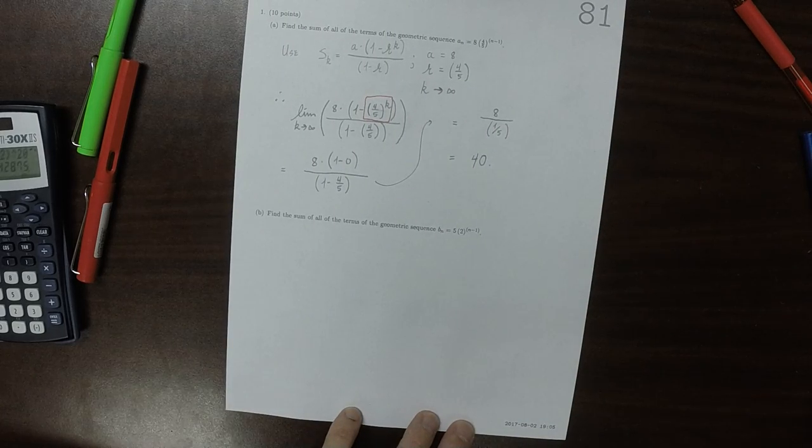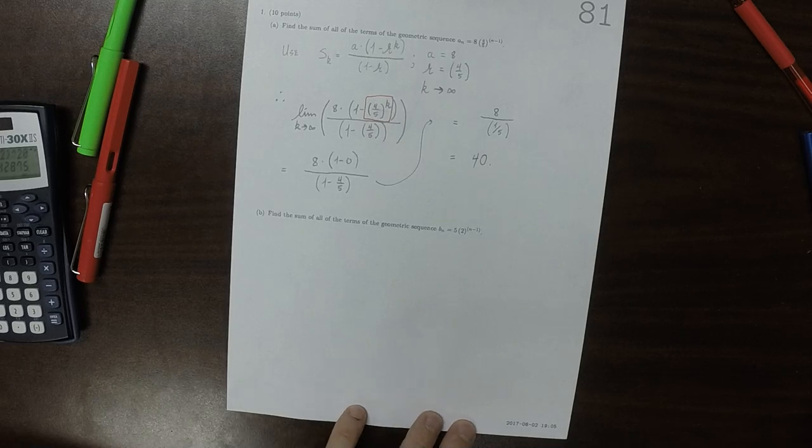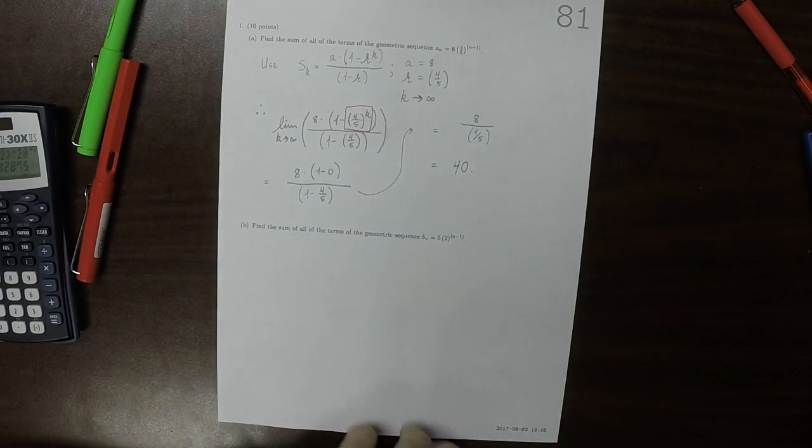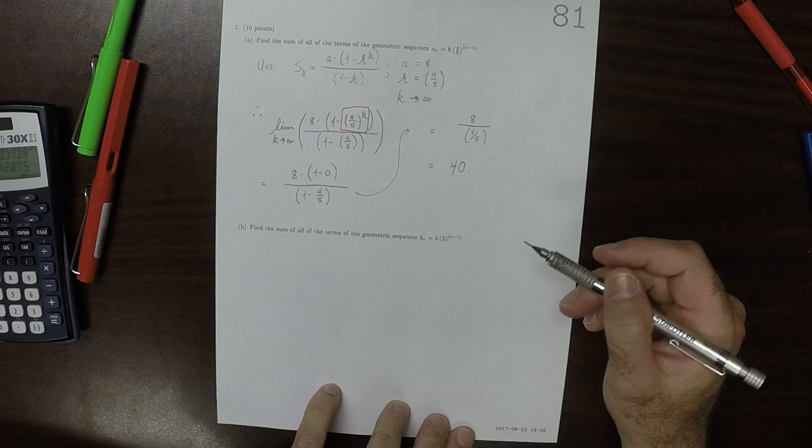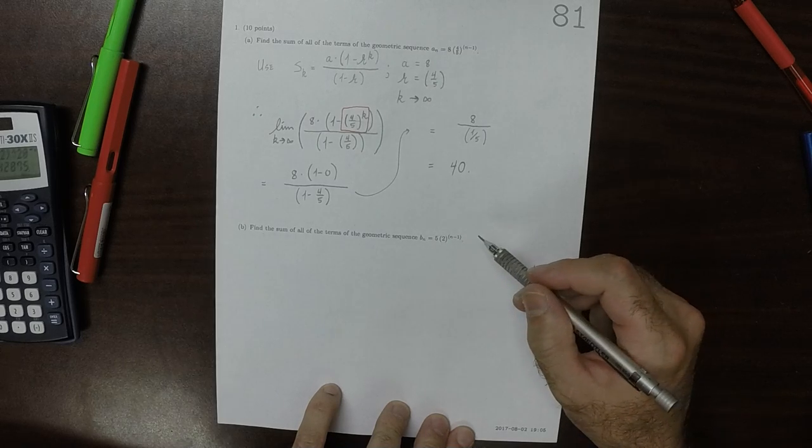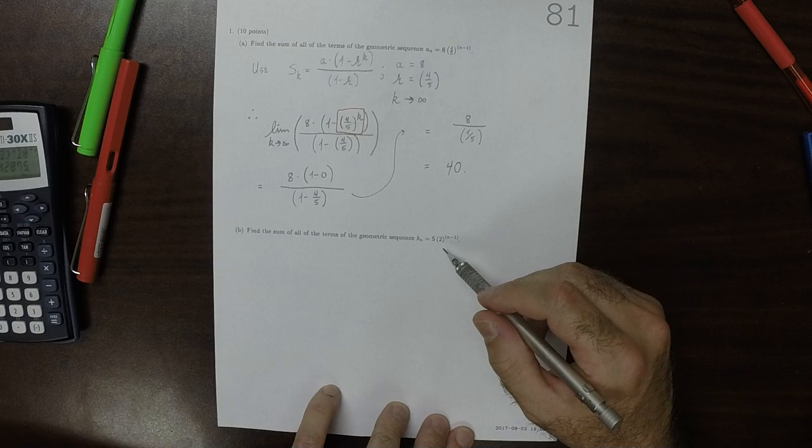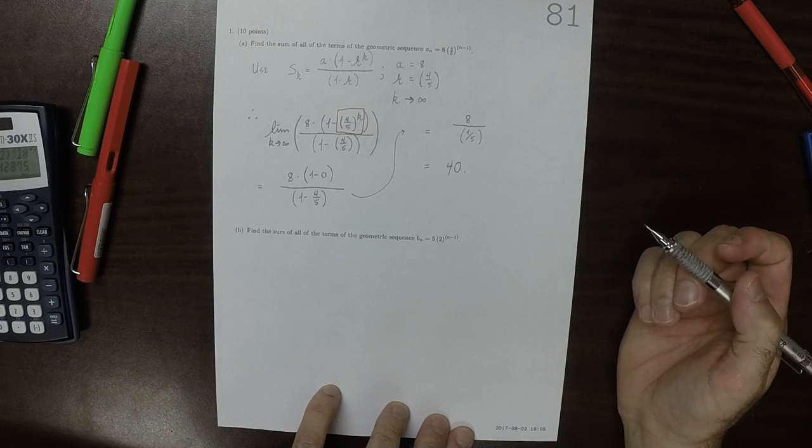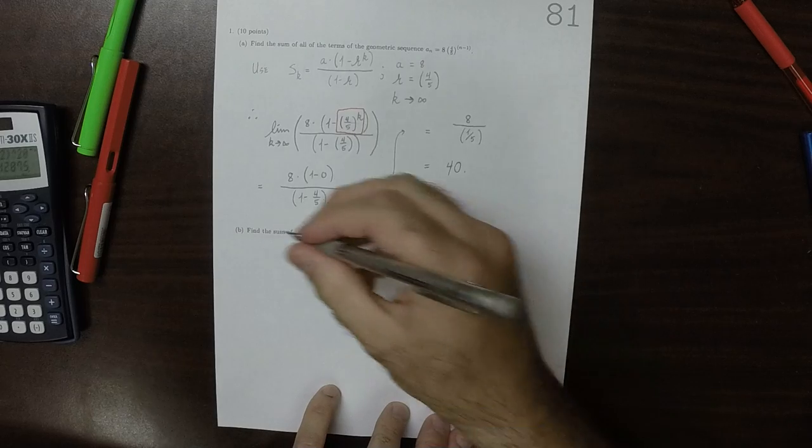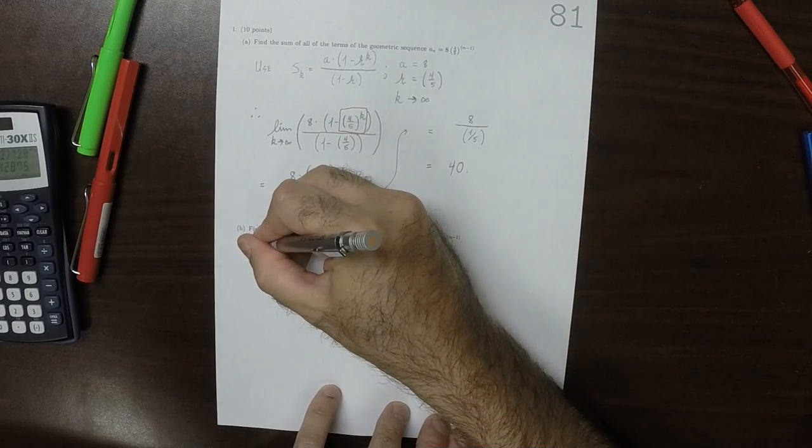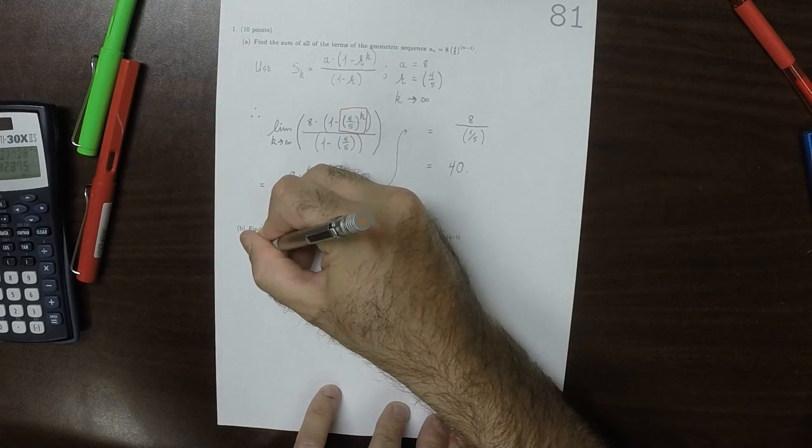So for part B, hopefully you were far more suspect about part B, because in written homework 80 you could see that the sum of the first 20 terms was already 5 million. And to be clear, notice that the first several terms of this sequence...